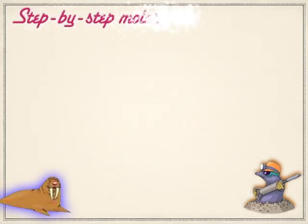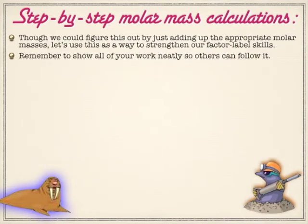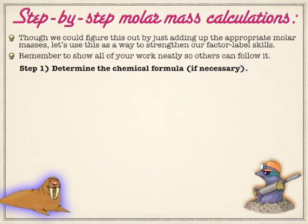We can certainly go through a more formalized approach to this. We're going to use this as an opportunity to strengthen factor label skills, unit manipulation, and things like that, because those skills are definitely going to come in handy later when we get into more complex things like stoichiometry. But first things first: figure out the correct formula. If you do the formula wrong, then you're not going to get anything else correct.